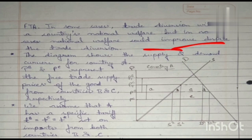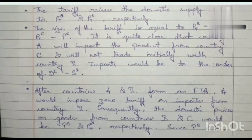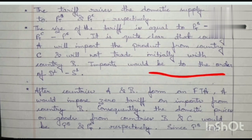The diagram shows the supply and demand curves for country A. PB and PC respectively represent the free trade supply prices of goods from countries B and C. Country A has a specific tariff TB equals TC equals T*, set on imports from both countries B and C. The tariff raises domestic supply prices to PTB and PTC respectively, where T* equals PTB minus PB equals PTC minus PC. Country A will import from country C and will not trade initially with country B. Imports would be of the order D1 minus S1.